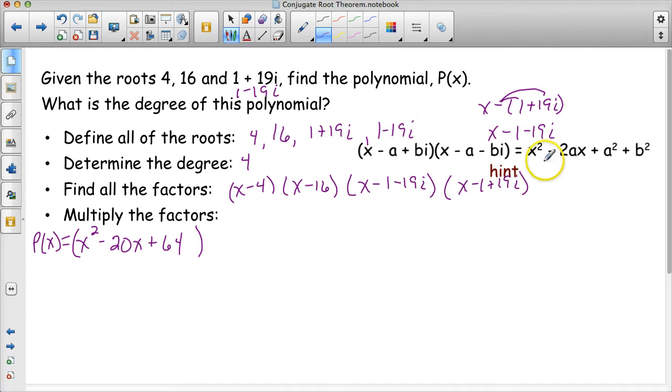The pattern says that I'm going to take x and square it. That makes sense, so I have x squared. Then it says that I'm going to subtract 2 times a times x. Well, let's figure out what a is. This was a and then this is minus bi. So a equals 1 and b equals 19. So this says minus 2 times a. So 2 times 1 is 2 times x, so minus 2x.